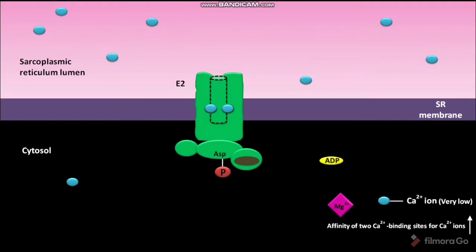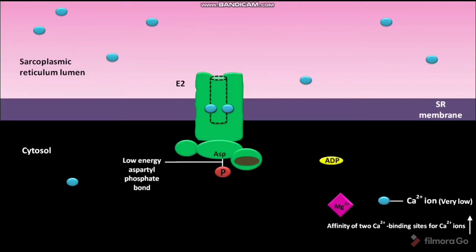In the E2 conformation, a low-energy aspartyl phosphate bond can be found between the transferred phosphate group and the aspartate amino acid in the phosphorylation domain. In the E2 conformation, the two calcium ion binding sites are accessible to the SR lumen, and the affinity of the two calcium ion binding sites for calcium ions decreases.